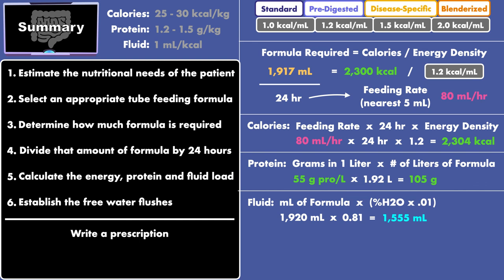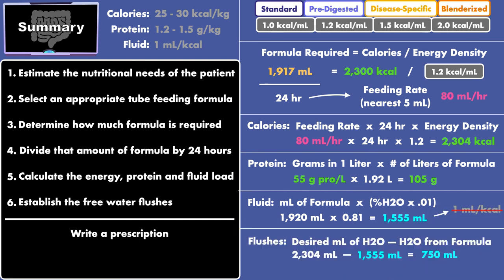If the amount of fluid does not satisfy the goal, establish free water flushes by taking the desired milliliters of water and subtracting the amount of water provided by the formula. Divide it evenly to give every 12 hours, 8 hours, 6 hours, or 4 hours, with an example being 250 milliliters every 8 hours.